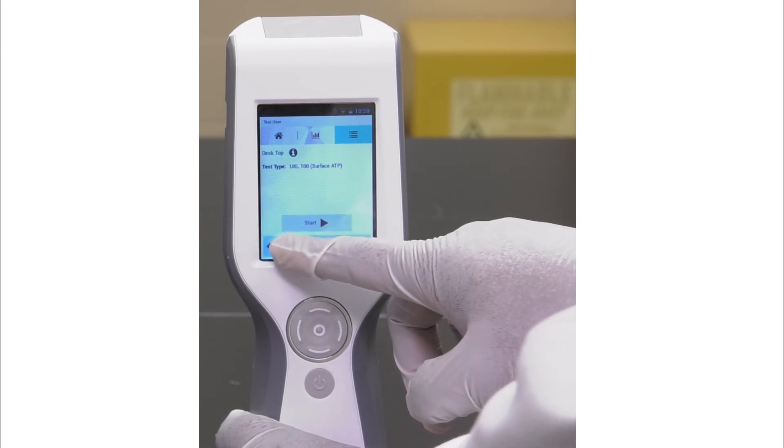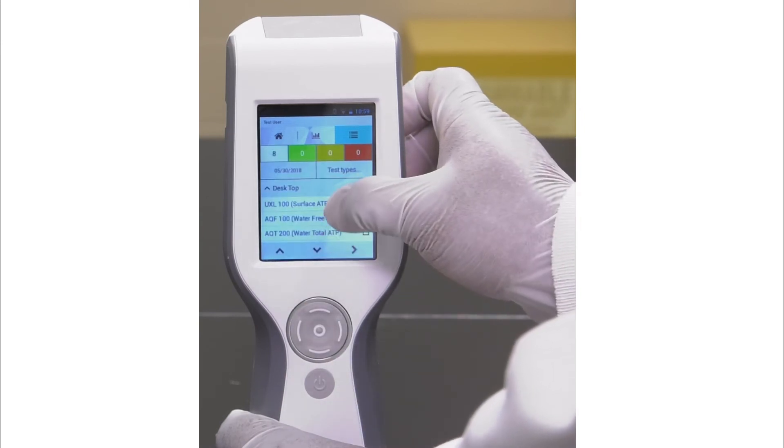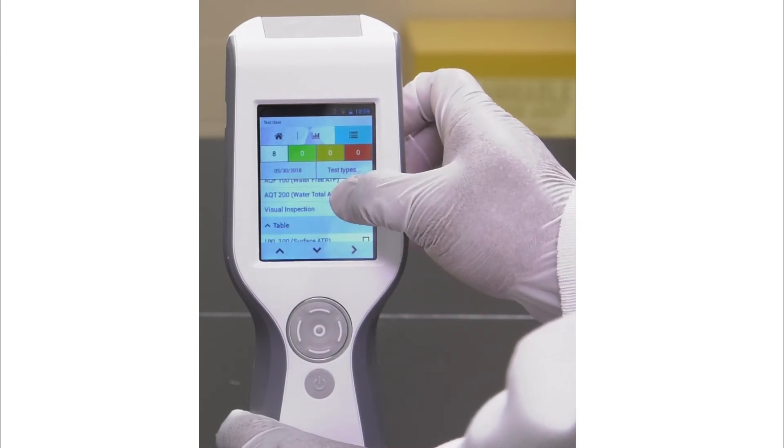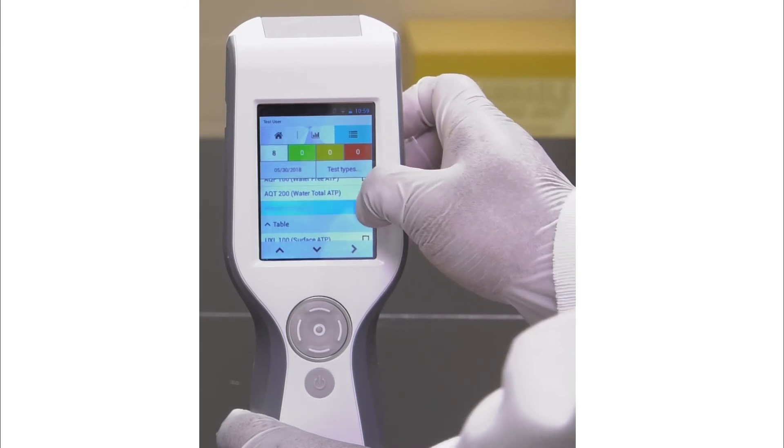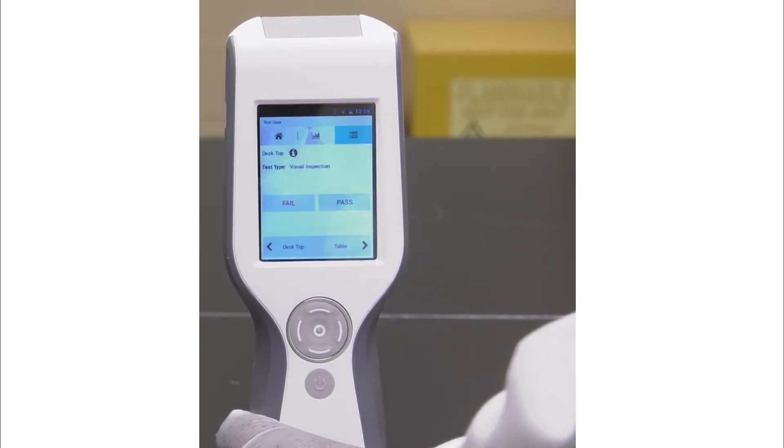Other types of tests can also be performed. For example, Visual Inspection. For Visual Inspection in Test Types, select Visual Inspection. After evaluation of the surface, select the appropriate result. For example, Fail.